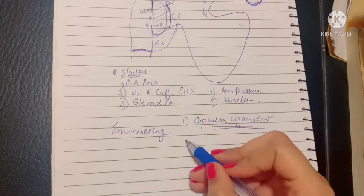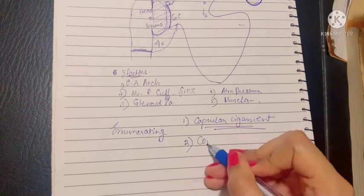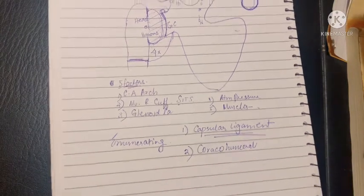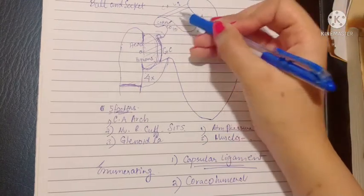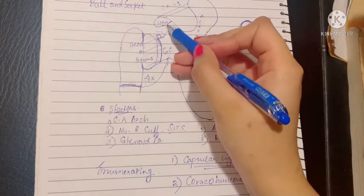Let's talk about the next ligament. This is the coracohumeral ligament. The name says it—it extends from the root of the coracoid process up to the neck of the humerus.